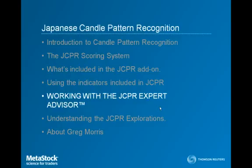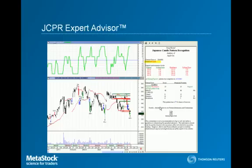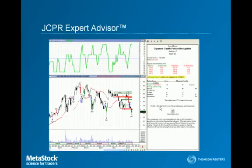Now I'm going to talk about how all of the indicators, the statistics, the scoring system, and the pattern recognition are incorporated into our expert advisor to give you clarity. Here I've opened up a chart of Apple with the expert advisor attached, which has a homing pigeon today. I've also added the indicators included in the JCPR system. Looking at the commentary, it's telling us the trend is bearish, and it's also telling us the latest support and resistance levels. The support and resistance levels always correspond with the very last bar of data loaded. It tells us the homing pigeon pattern was completed on 6-13-2011.